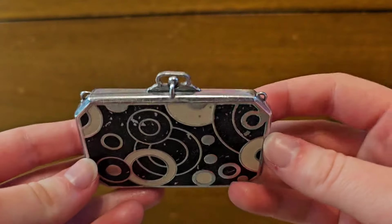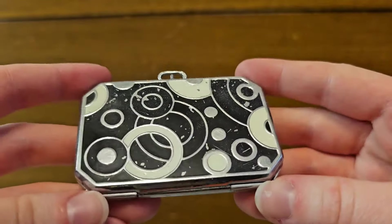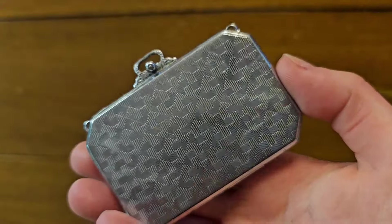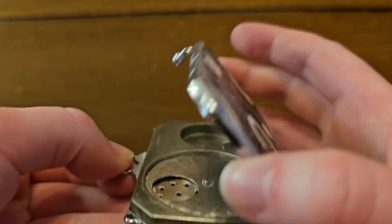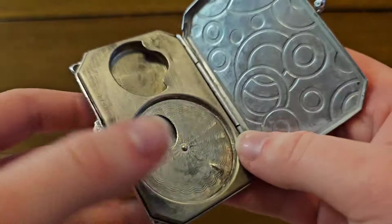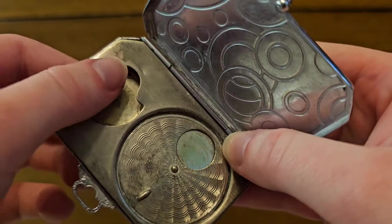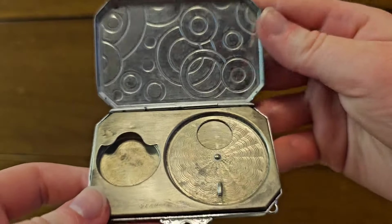This one is actually missing the chain. You can see the loops where it would be attached. But she's cute regardless. Missing the mirror. Powder, rouge. Very cute.